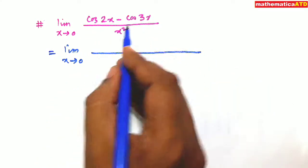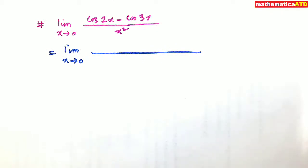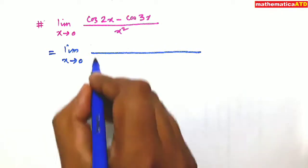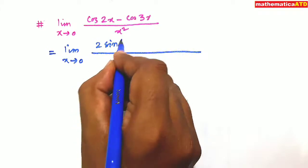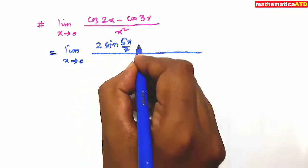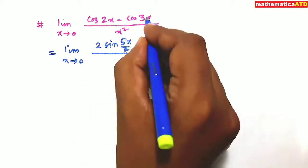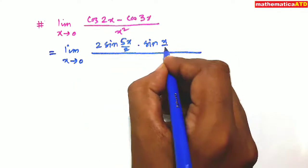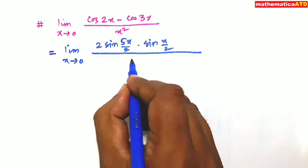This is cos c minus cos d. So you know this formula. This is 2 sin c plus d by 2. That means 2 sin of 5x upon 2 into sin of d minus c by 2. 3x minus 2x, that is x upon 2, divided by x square.